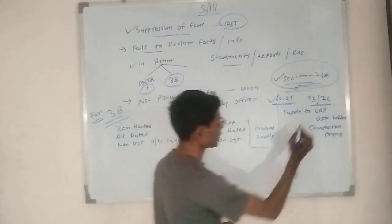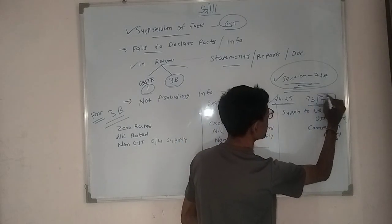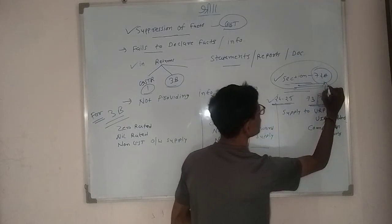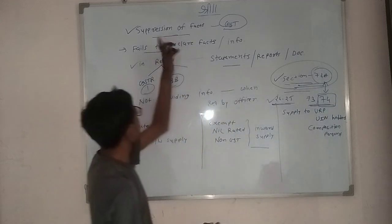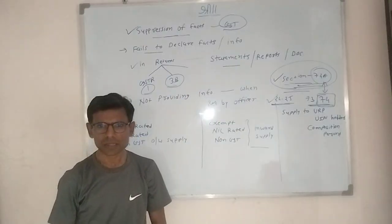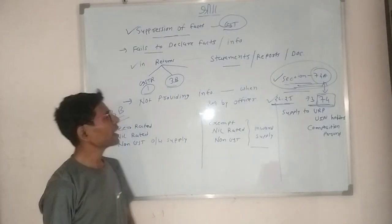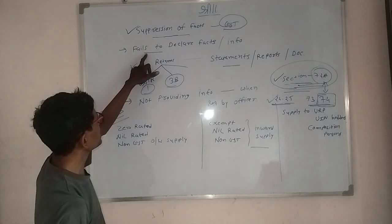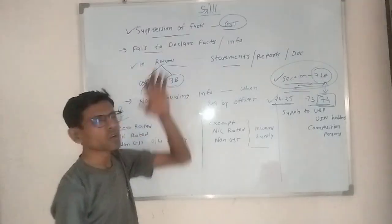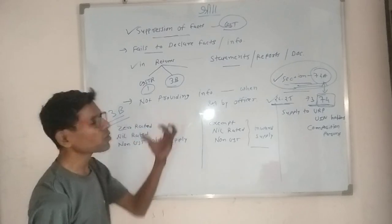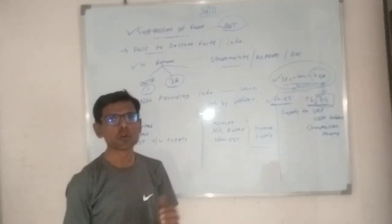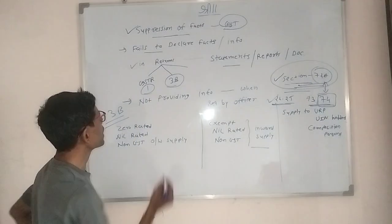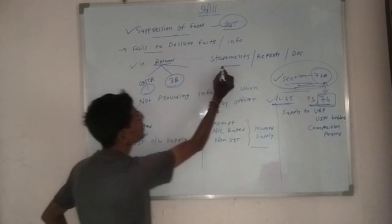Now, suppression of fact ka meaning — for 74A and 73/74, both have the same meaning. Suppression of fact means failure to declare the fact or information. Matlab, aapne koi fact or information declare nahi kiya hai, in the return.